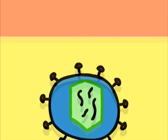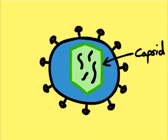They all have a similar structure, being surrounded by a protein shell called a capsid, which protects the viral genome.